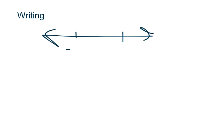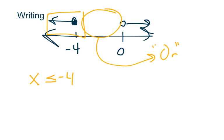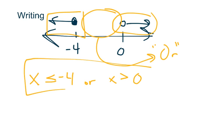Writing is just the opposite of graphing — you're given a graph and you write the inequality. For example, a number line with a closed circle at negative four going left, and an open circle at zero going right. First determine the type: there's a big gap, so this is an 'or'. The left part says x is less than or equal to negative four. The right part says x is greater than zero. Put 'or' between them and you're done.